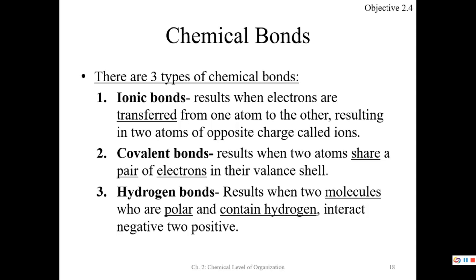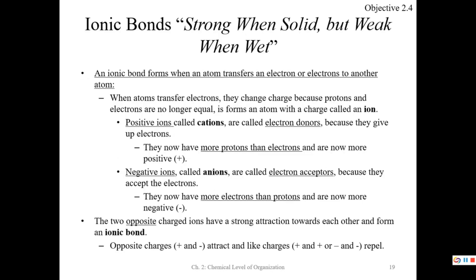Covalent bonds involve sharing pairs of electrons in the valence shell. And hydrogen bonds involve two molecules that are polar, contain hydrogen, and they interact from a negative to positive charge. So we're going to start off with the ionic bond.